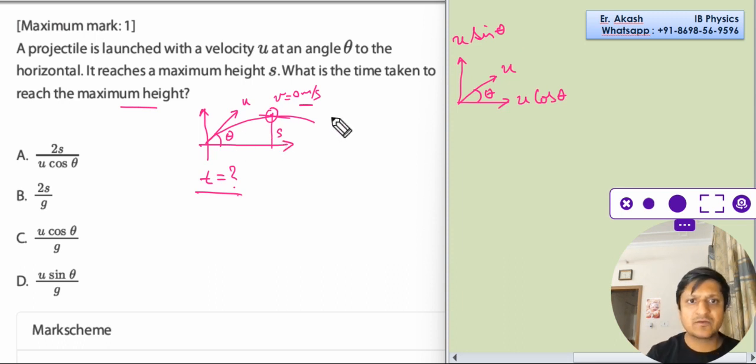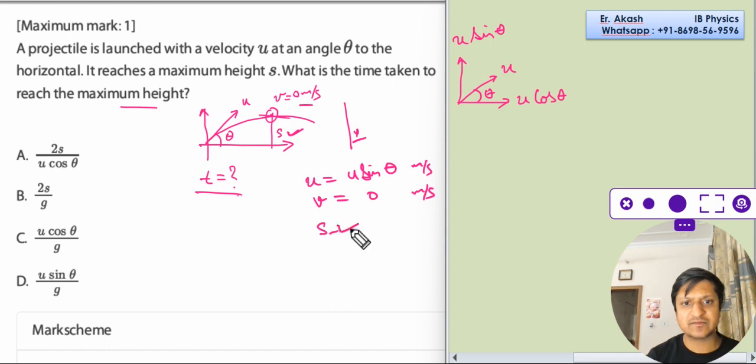In this question, because we are concerned about the height, we will take all the vertical path. So u is equal to u sine theta, v is equal to 0 meters per second, and the distance is S.